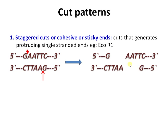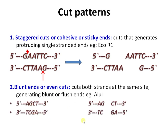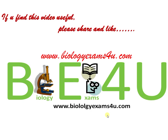The second type of cut is called blunt ends or even cuts, where the enzyme cuts at the same position on both strands generating blunt ends. An example is HaeIII, which cuts the sequence GGCC evenly at both ends. Often, blunt ends are converted into sticky ends by adding linkers, adapters, or short stretches of DNA.